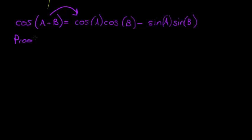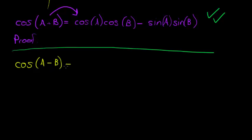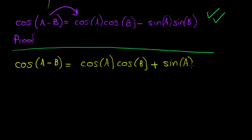Well, that's where the proof comes in. I'm not going to do the proof here yet, because what we need to understand it we haven't discussed yet. So just trust me for now, and let's look at why cos(A minus B) equals cos A cos B plus sine A sine B, given that we accept cos(A plus B) is true.